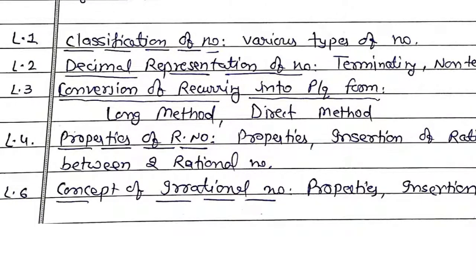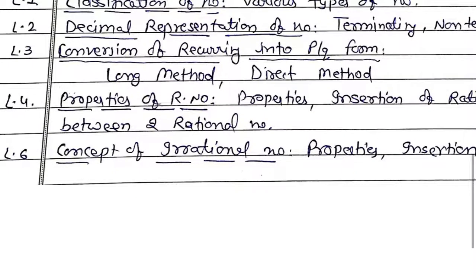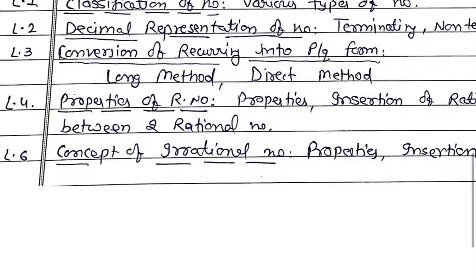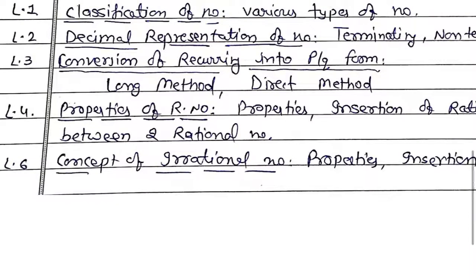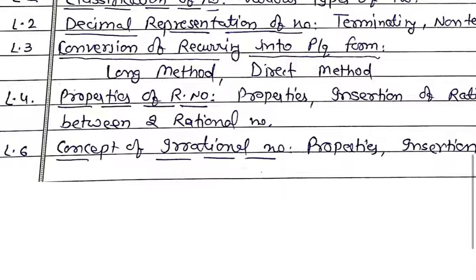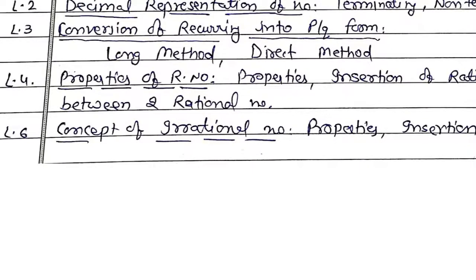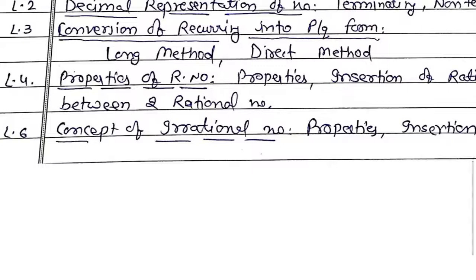Lecture 3 ko bhi aapko follow karna hai, jis mein conversion of recurring decimal into p by q form bataya hua hai. Wahan par 2 methods hain — first one is the long method, and the next one is the direct method. Long method aap Class 10th ke point of view se na bhi padhein, but direct method mein suggest karunga ki aap samjhein, jis se ki aap recurring decimal se p by q form mein easily conversion kar sakein. Ismein bhi NTSC mein previous year ka question aaya hua hai.